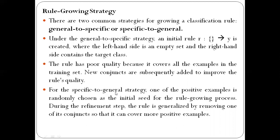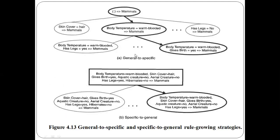Now coming to the second strategy — specific-to-general. In this case, we initially have one positive example that covers all the training examples. During rule refinement, we remove one conjunct at each step. It is the exact opposite of general-to-specific. In specific-to-general, we start with one positive example covering all rules, and in each subsequent step we remove one conjunct.